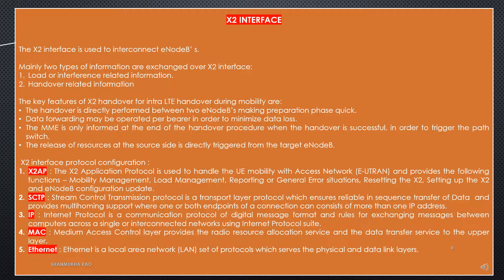The X2 interface is used to interconnect E-NodeBs. Mainly two types of information are exchanged over the X2 interface: first is load or interference related information, and second is handover related information. The key features of X2 handover for intra-LTE handover during mobility are: the handover is directly performed between two E-NodeBs making the preparation phase quick; data forwarding may be operated per bearer in order to minimize data loss; the MME is only informed at the end of the handover procedure when the handover is successful, in order to trigger the path switch; and the release of resources at the source site is directly triggered from the target E-NodeB.